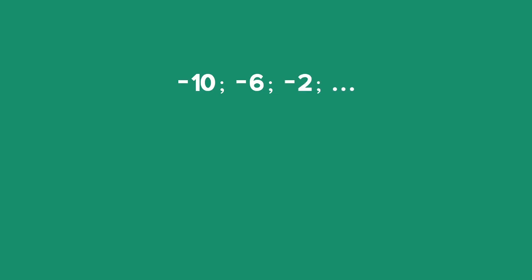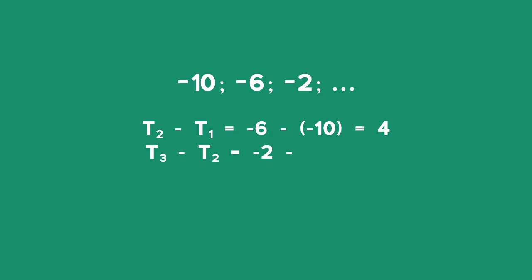Using the given sequence negative 10, negative 6, negative 2, and so on: term 2 minus term 1 is equal to negative 6 minus negative 10, which is equal to 4. Term 3 minus term 2 is equal to negative 2 minus negative 6, which is equal to 4. Therefore D is equal to 4. In order to confirm that a sequence is arithmetic, all we need to do is deduce that there is a common difference between terms. In general, the formula for finding the common difference is T(N+1) minus TN.